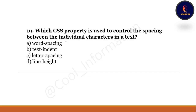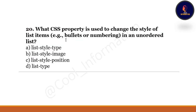Question 19: Which CSS property is used to control the spacing between individual characters in a text? Option A: word-spacing. Option B: text-indent. Option C: letter-spacing. Option D: line-height. The correct option is option C, which is letter-spacing.